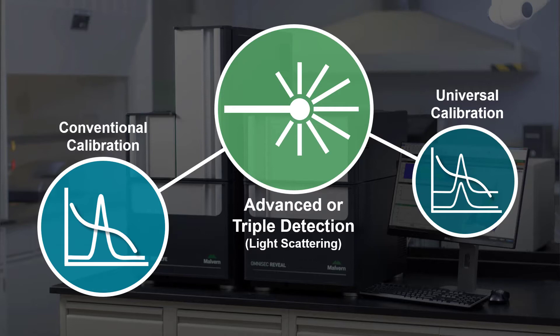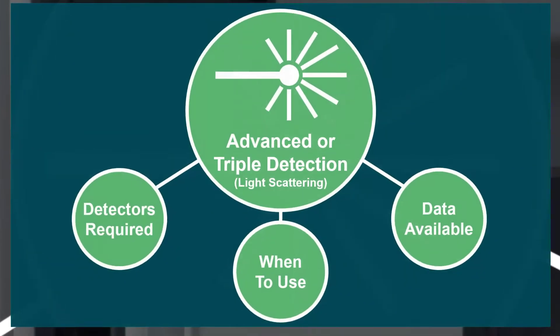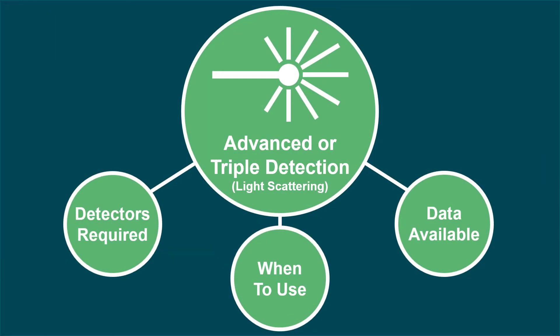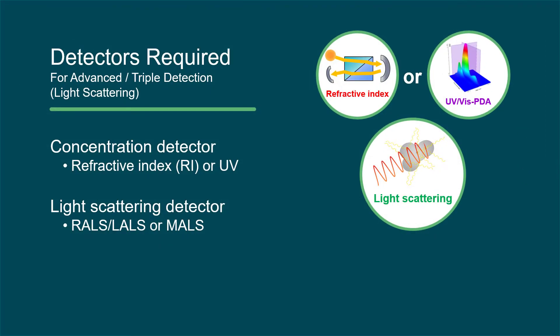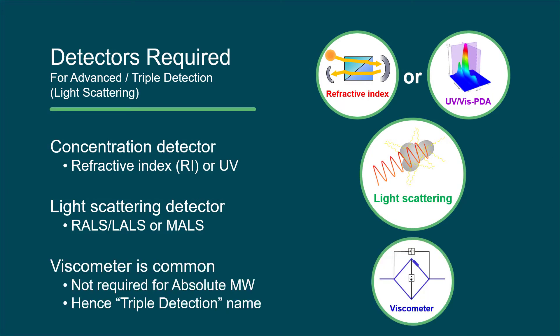We'll start with advanced or triple detection. As mentioned earlier, this method refers to molecular weight calculation with a light scattering detector. Therefore, the minimum configuration includes both a concentration and a light scattering detector. A viscometer detector is commonly added, hence the name triple detection, but is not required for absolute molecular weight determination.